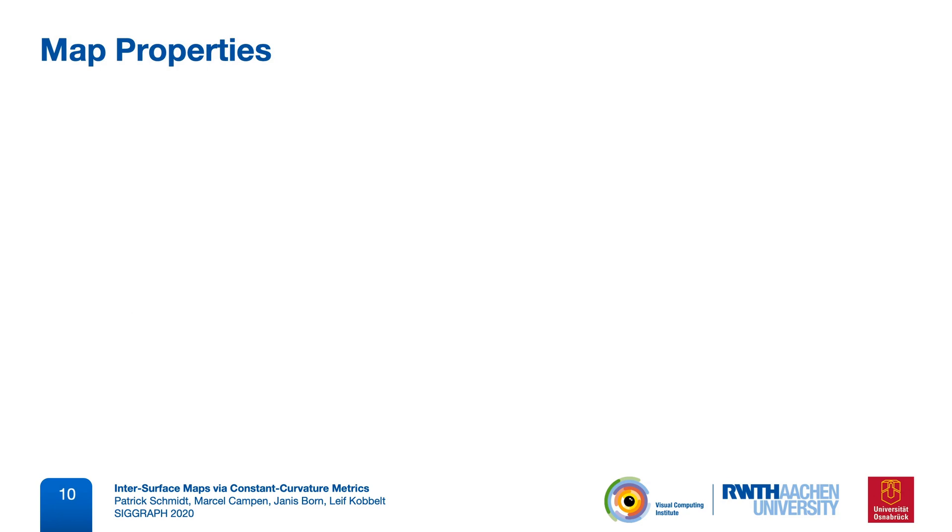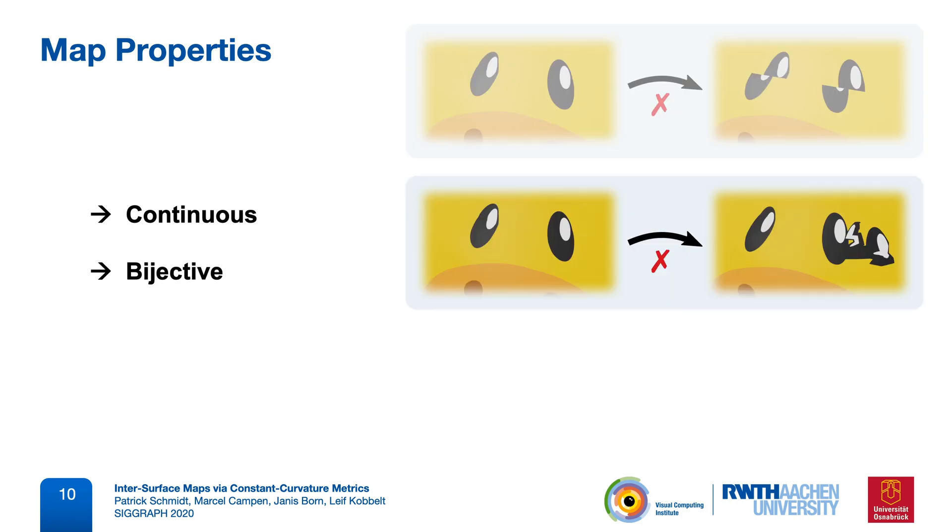First of all, it is important that the map is continuous, that is, without sudden jumps, because these could tear the transferred data apart and invalidate it. We also need the map to be bijective, meaning that it does not contain any fold-overs, and that it covers both meshes entirely, so that we have a full 1-to-1 correspondence.